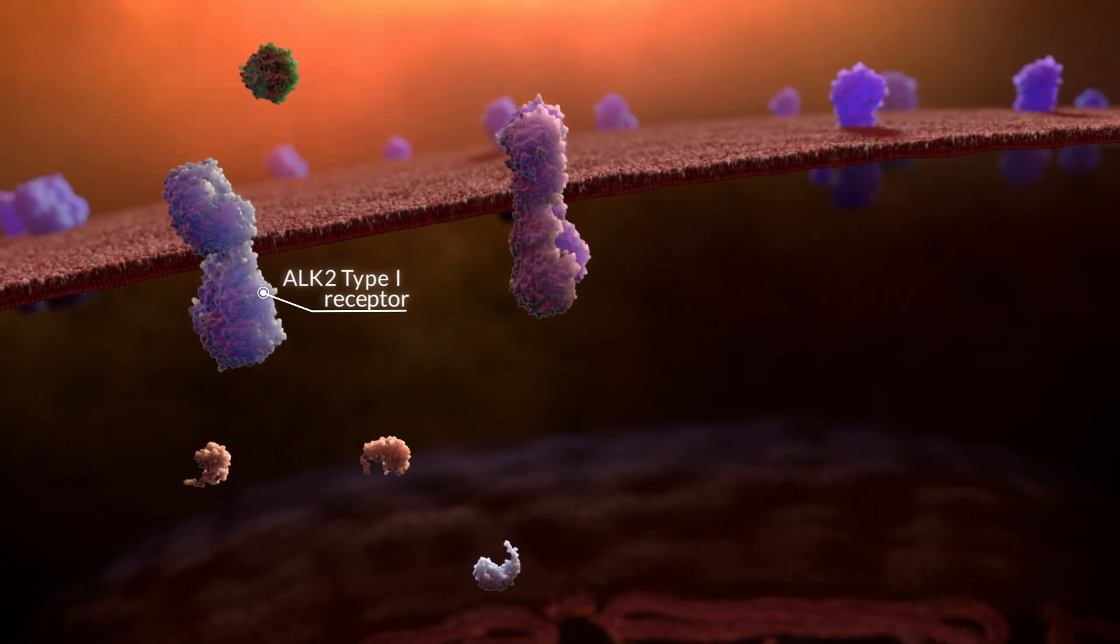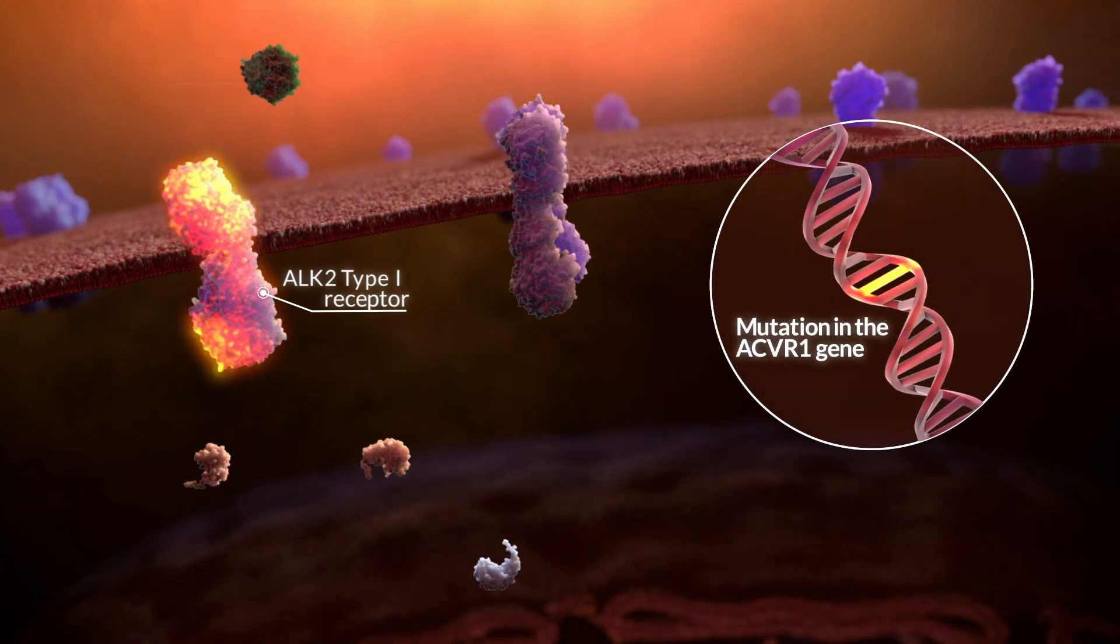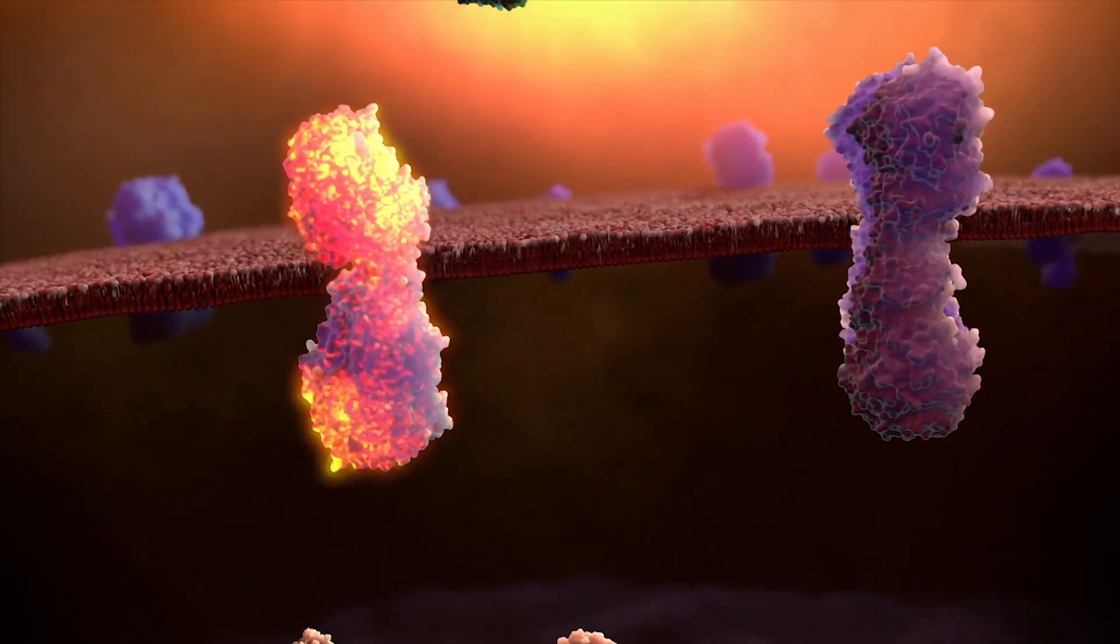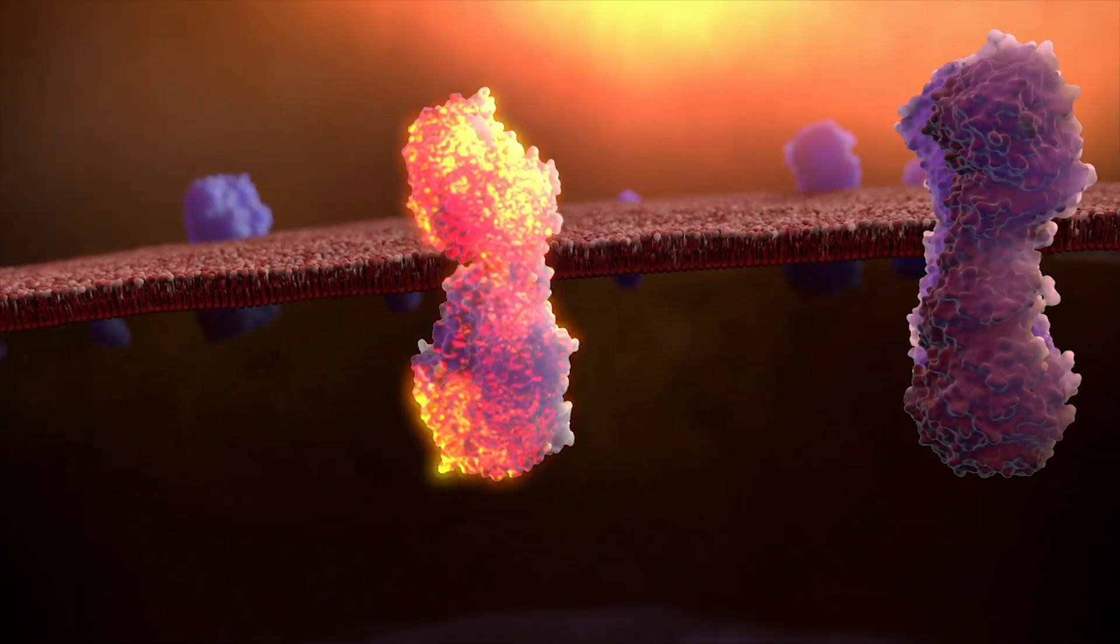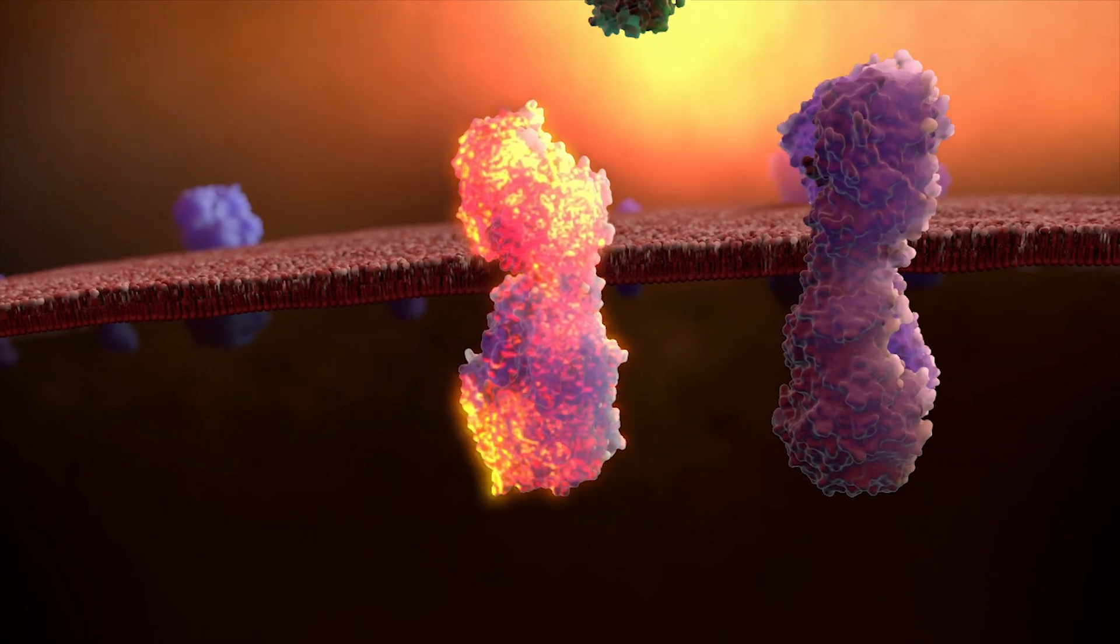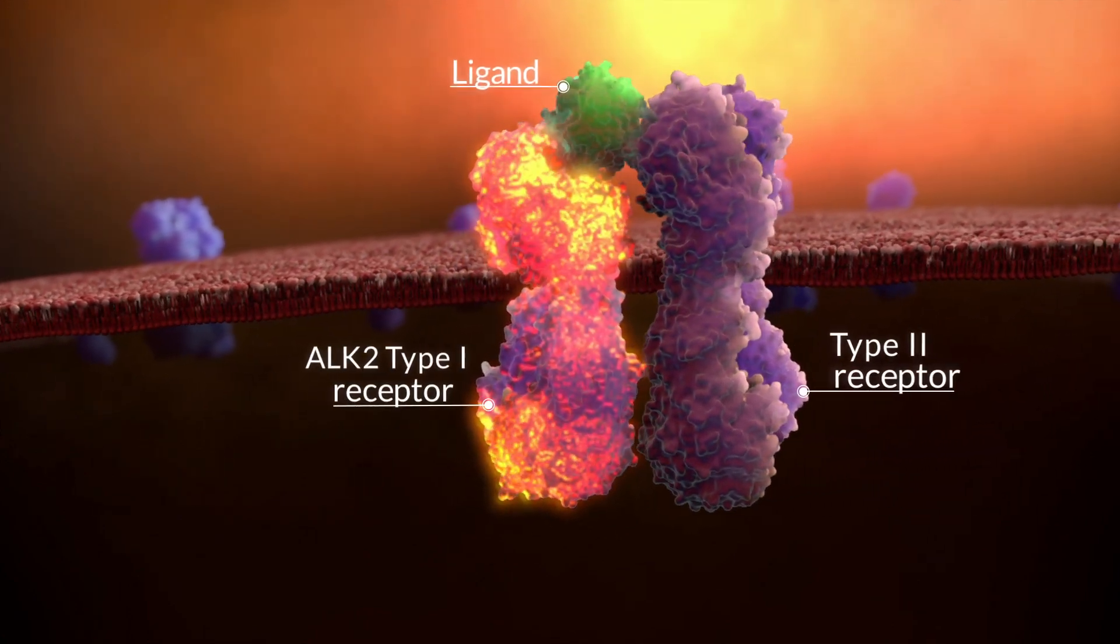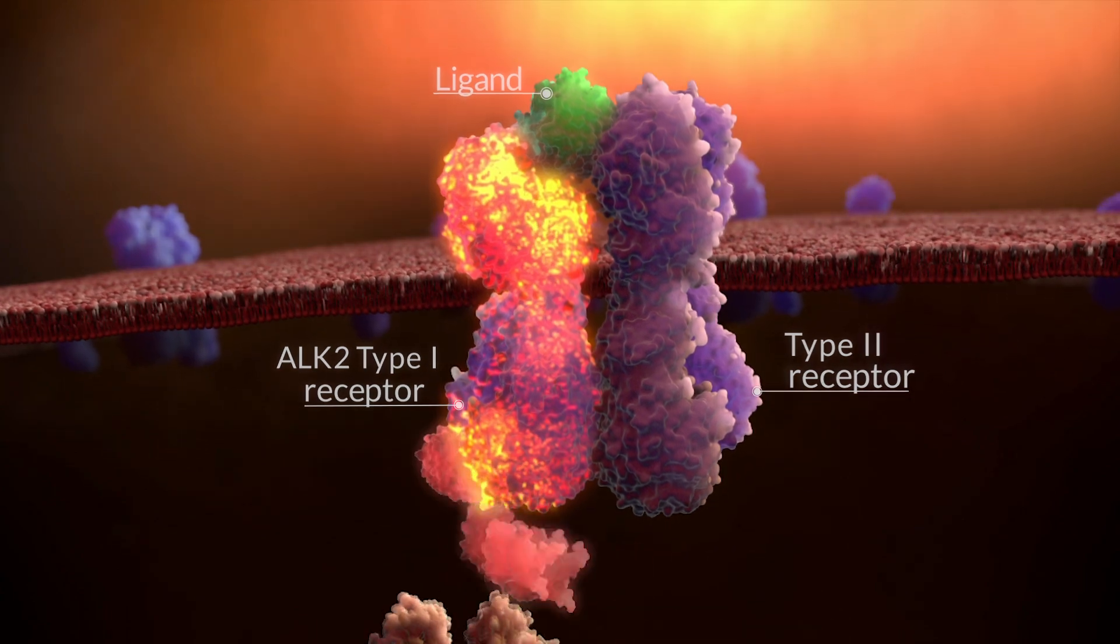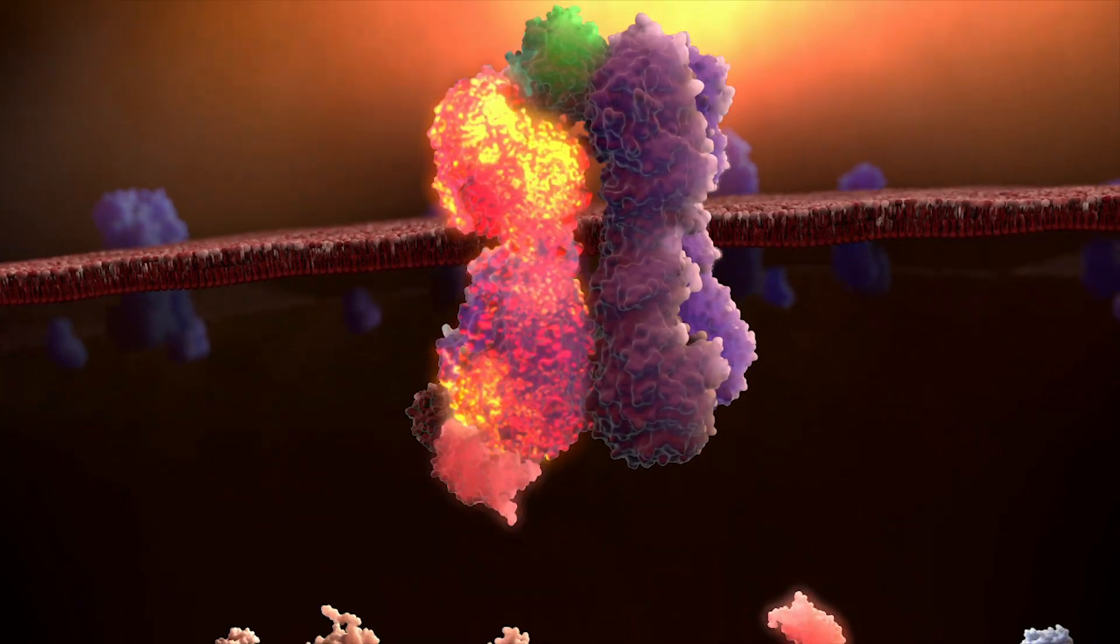Individuals with FOP have a mutation in the ACVR1 gene that encodes for the ALK2 receptor, a BMP type 1 receptor. The mutation allows the receptor to become more active, especially when bound by extracellular proteins called ligands, thereby resulting in excessive BMP signaling.